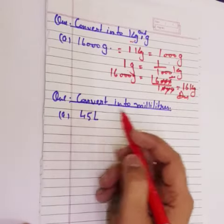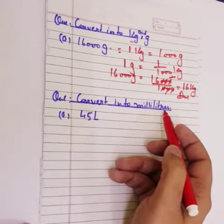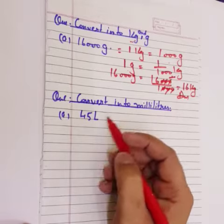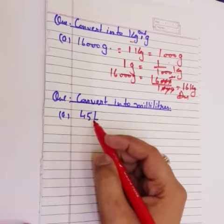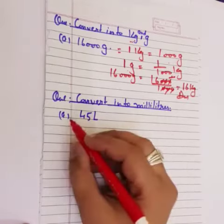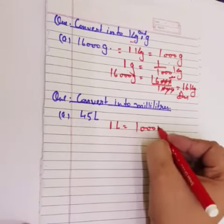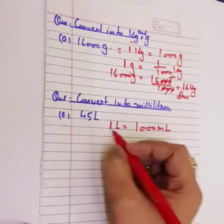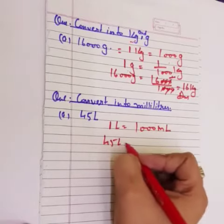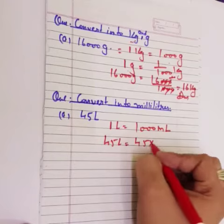Next हम से हैं. Convert into milliliter. Milliliter में change करना है. A, 45 liter. 1 liter is equal to 1000 ml यानी की milliliter होते हैं.